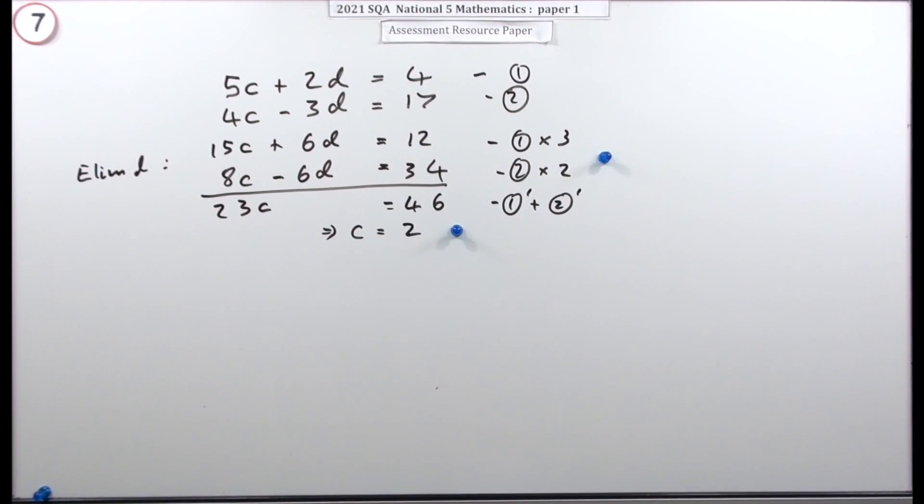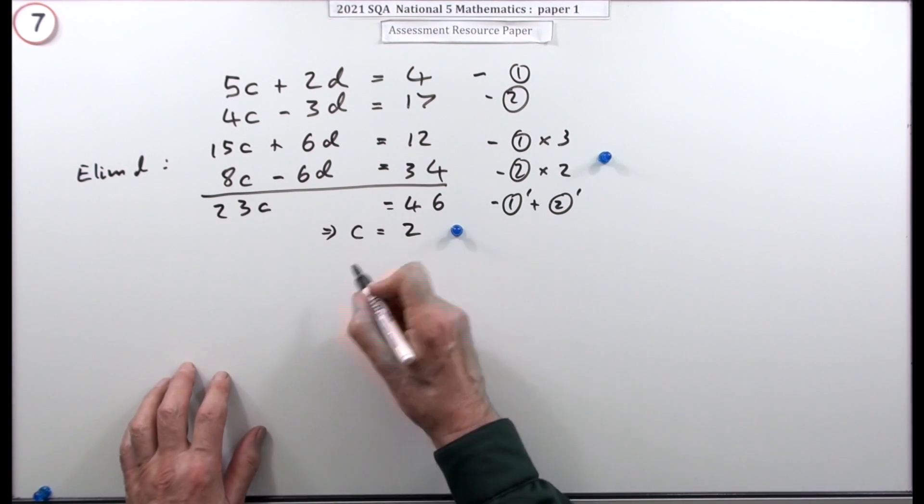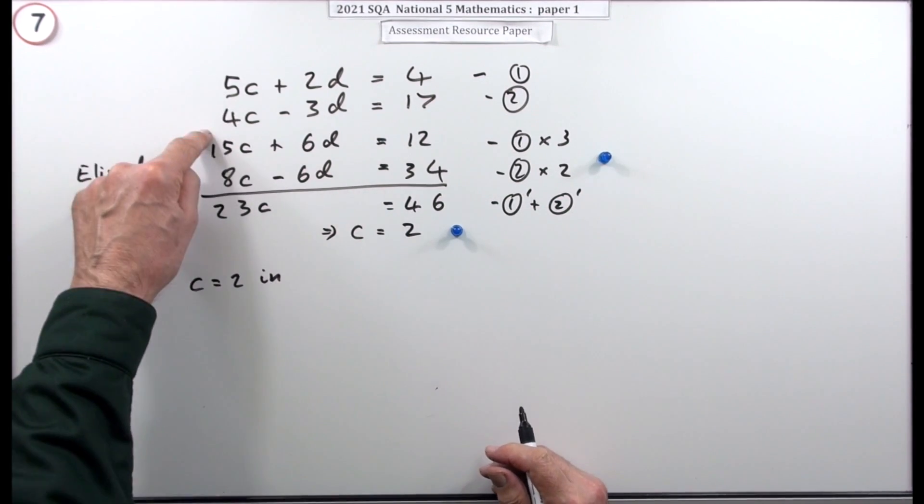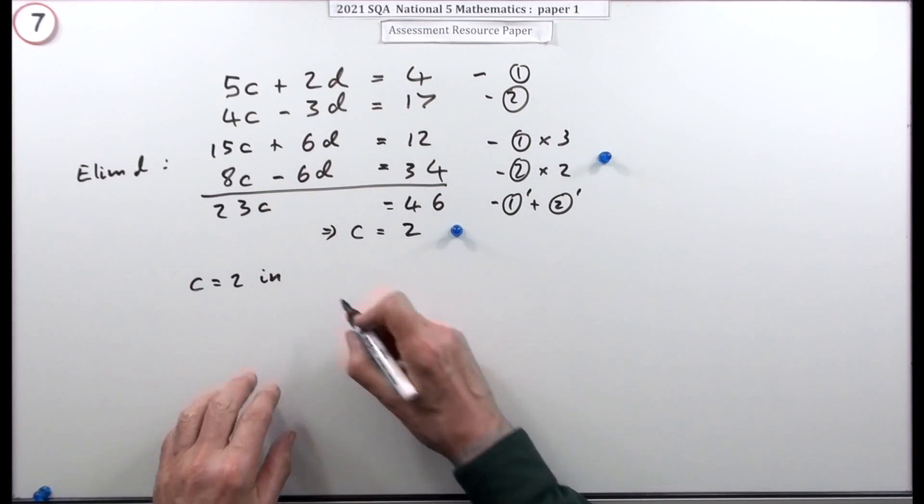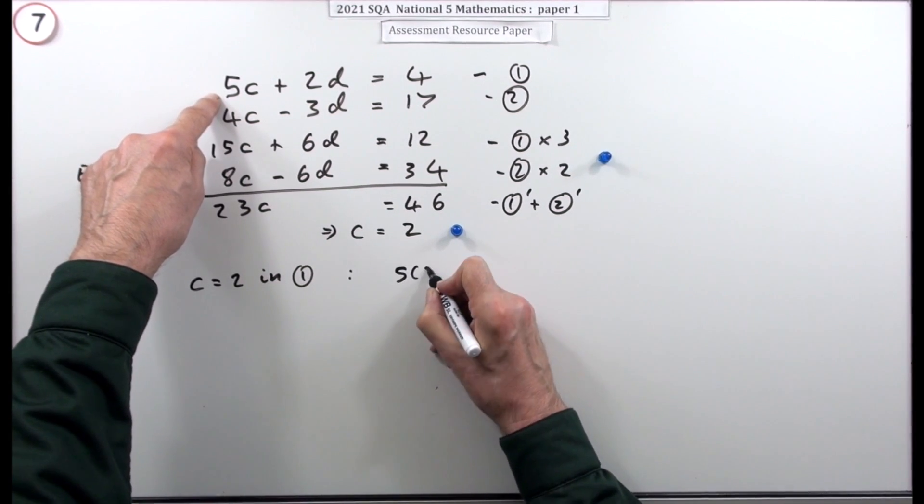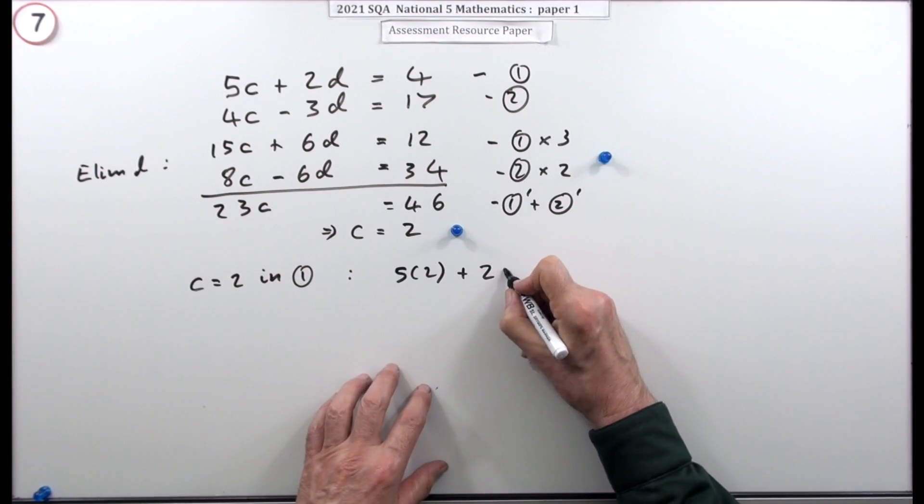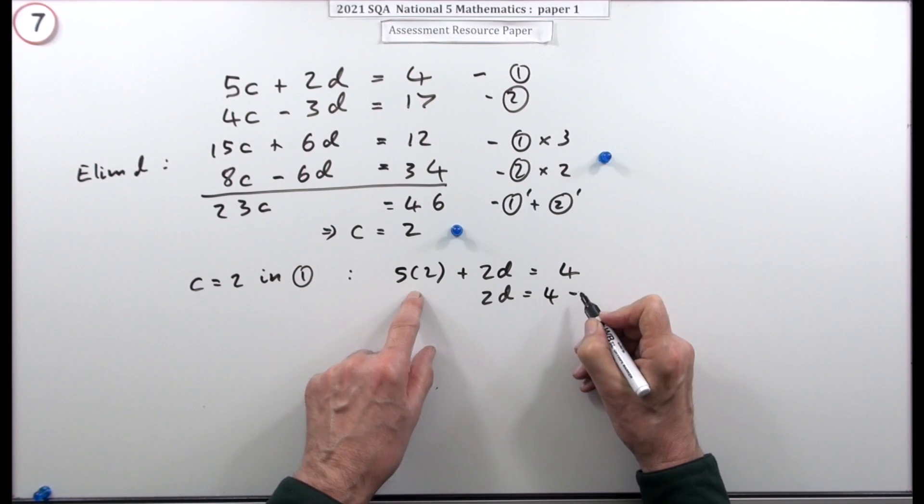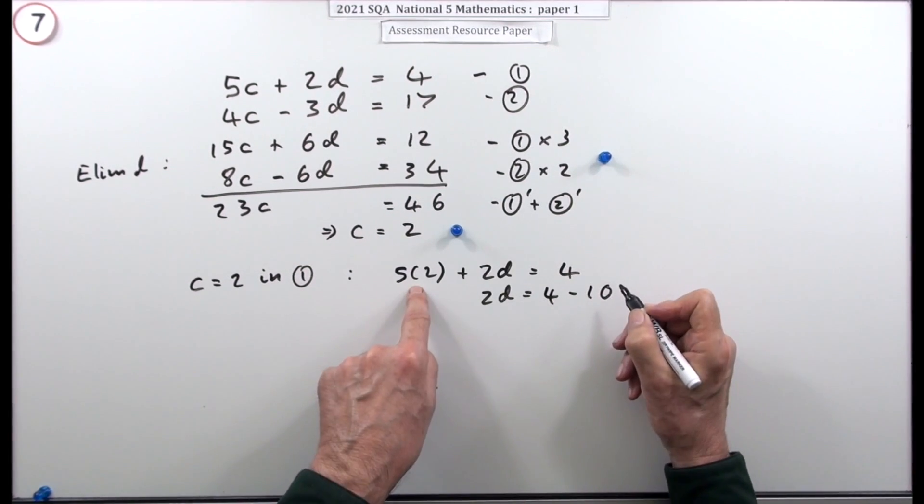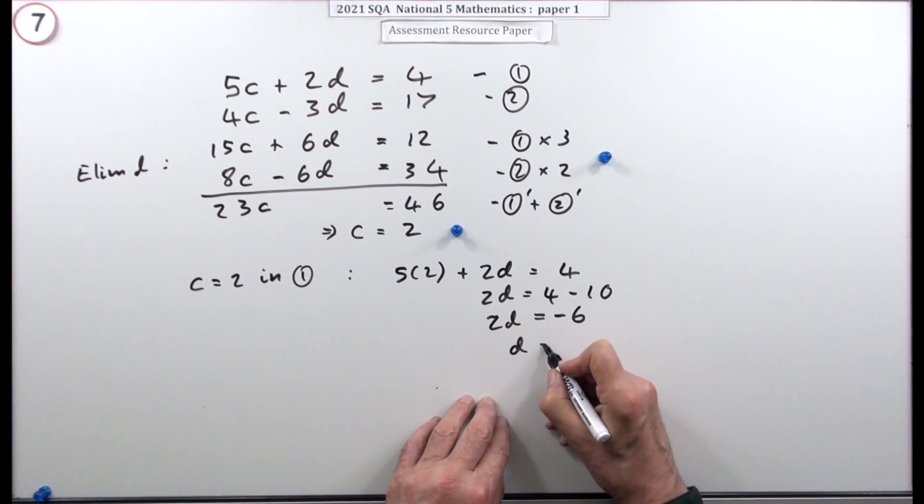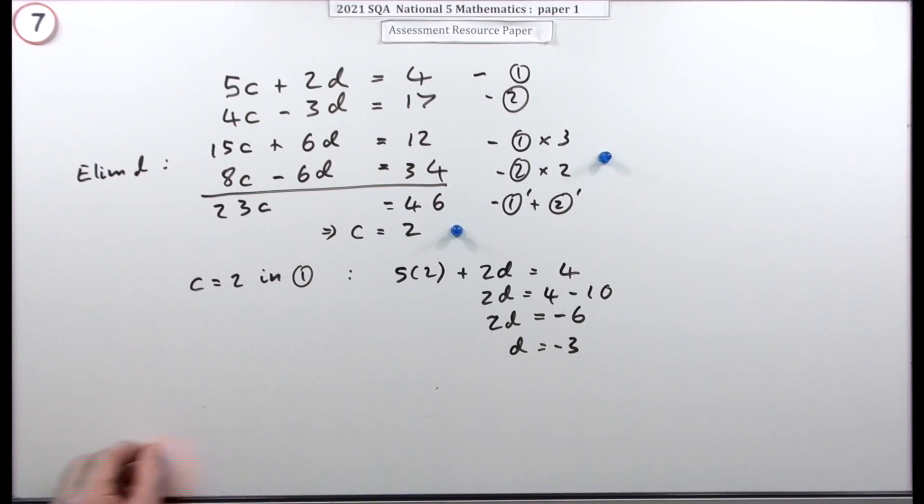So straight away there's the next mark. Now to find the last one, to get d I just go back and put that c in. I put c equal to two into whichever of those looks easier, it would be this one, because I'll put it in number one. So if I put that in number one, number one now reads: five lots of two, or I could have gone straight in, my 10 plus 2d is equal to four. So 2d will be, I'll just put it down, take the 10 across and subtract. Of course I could just jump straight to the answer, that's negative six, so d is negative three. There we go.